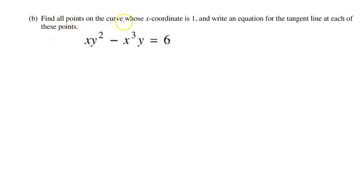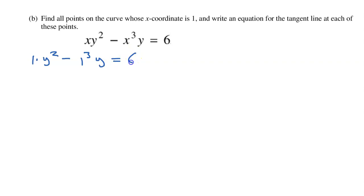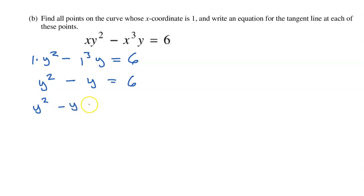Part B says: find all points on the curve whose x-coordinate is 1 and write an equation for the tangent line at each of these points. Since we know the x-coordinate is 1, let's substitute 1 for the x values and see what happens. We will have 1 times y squared minus 1 to the third power times y equals 6, which is simply y squared minus y equals 6. Let's subtract 6 from both sides: y squared minus y minus 6 equals 0.